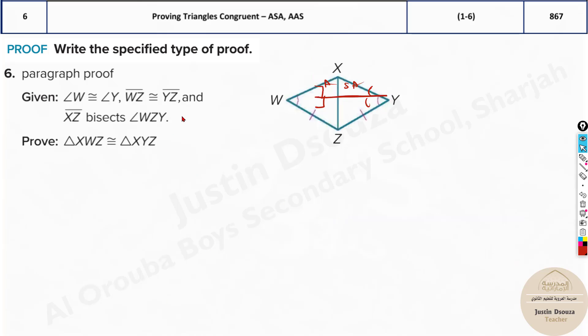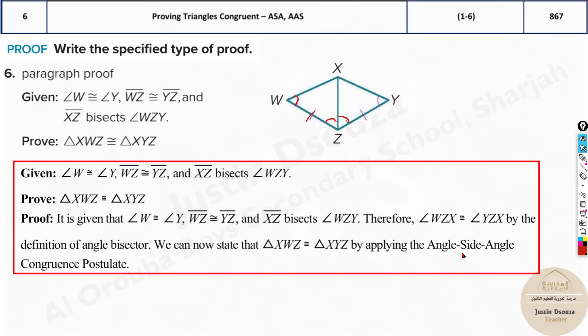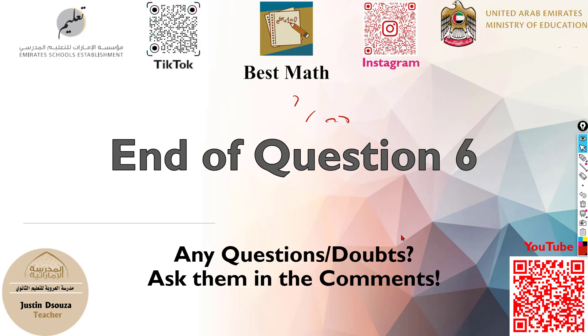The last problem: what do we have? WZ is congruent to YZ, and XZ bisects angle WXY. So again, angle-side-angle. These bisections mean these both are equal, so it is again ASA postulate. That's how we can easily go through these problems. Just look into the congruency postulates, look at the given, and then you can easily prove what is required.